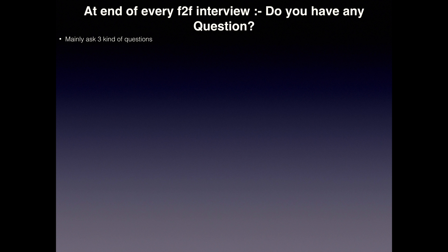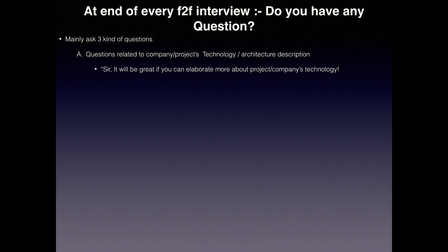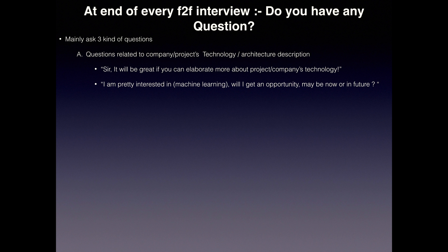There are mainly three kinds of questions you can ask. The first type is related to company projects, technology, or architecture. For example, you can say: 'Sir, it would be great if you could elaborate more about the project or the company's technology. I am quite interested in machine learning — or any other technology. Will I get an opportunity to work on it here, now or in the future? What new technologies can I learn in this organization?'